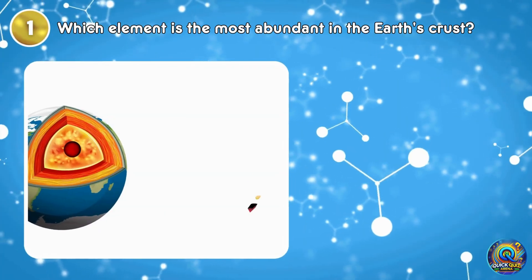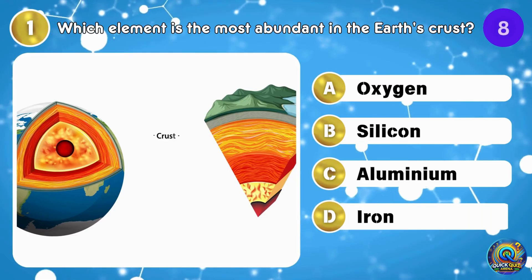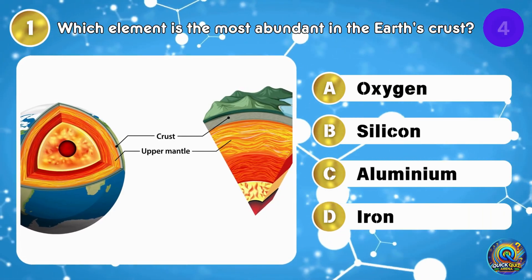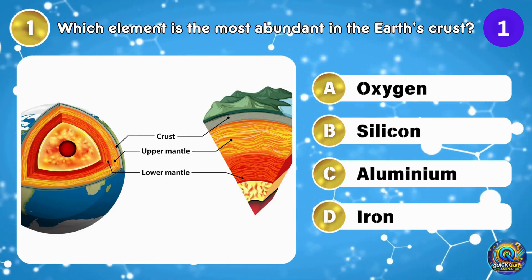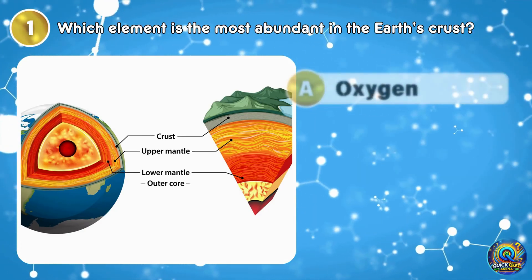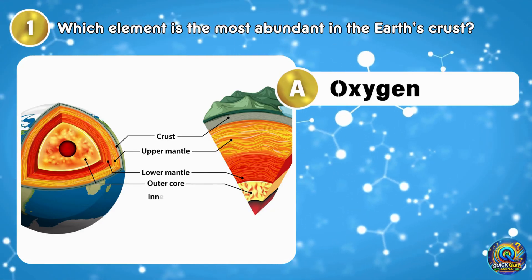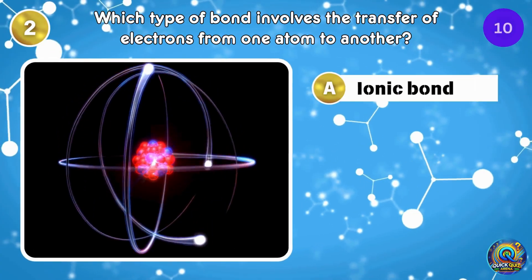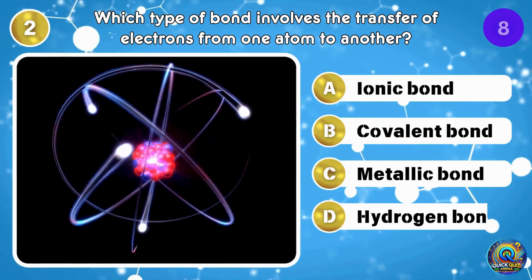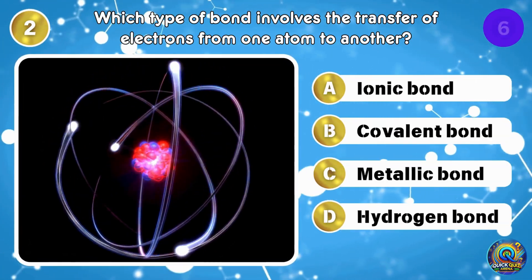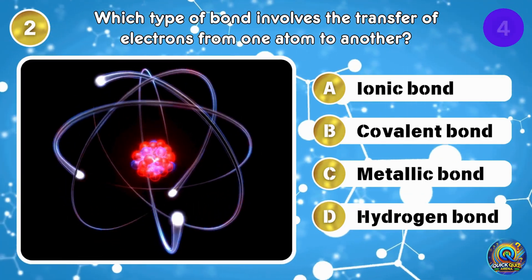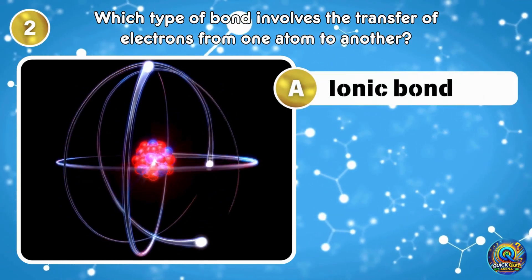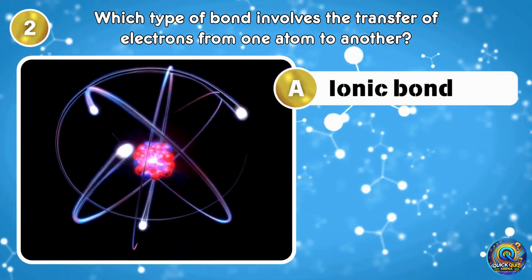Which element is the most abundant in the Earth's crust? The answer is oxygen — it makes up almost half of the Earth's crust. Which type of bond involves the transfer of electrons from one atom to another? The answer is ionic bond. Electrons are switching places like they're at a party.